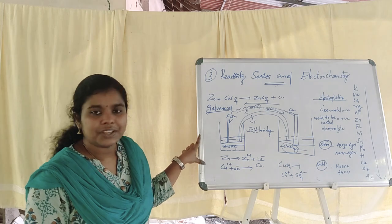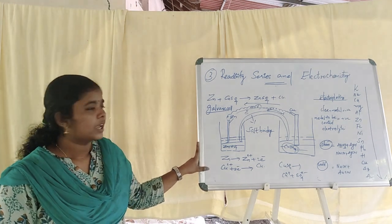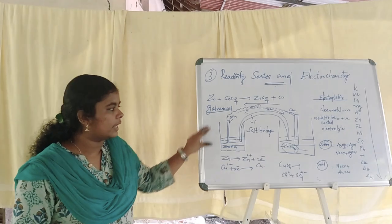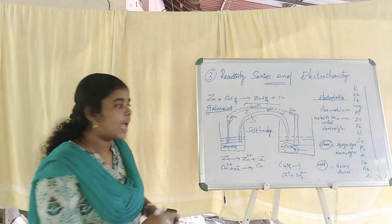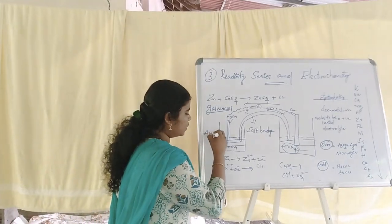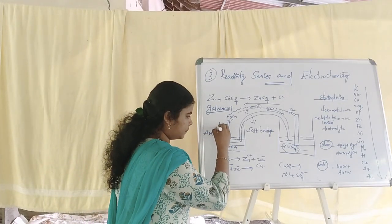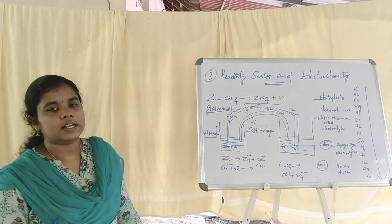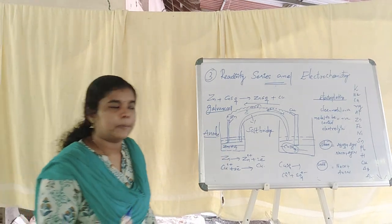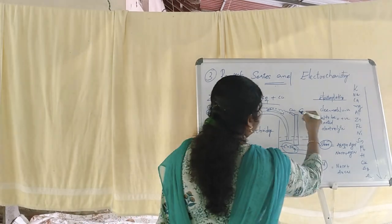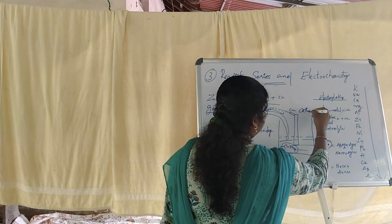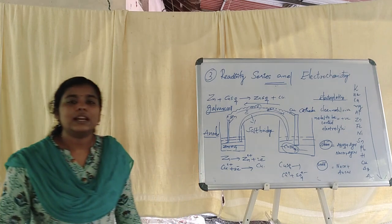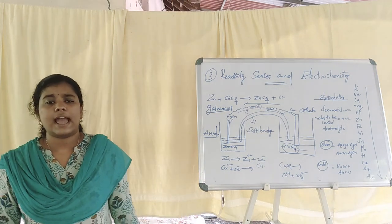These are the reactions taking place. Where oxidation occurs, that electrode is the anode. The oxidation is occurring here — that is the anode. This is a typical Galvanic Cell, also known as the Daniell Cell.